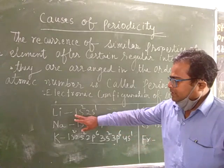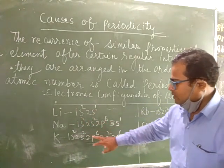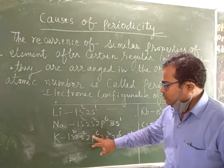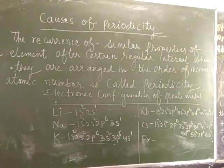In case of lithium 1s2 2s1, sodium 1s2 2s2 2p6 3s1, potassium 1s2 2s2 2p6 3s2 3p6 4s1, similarly this will happen.